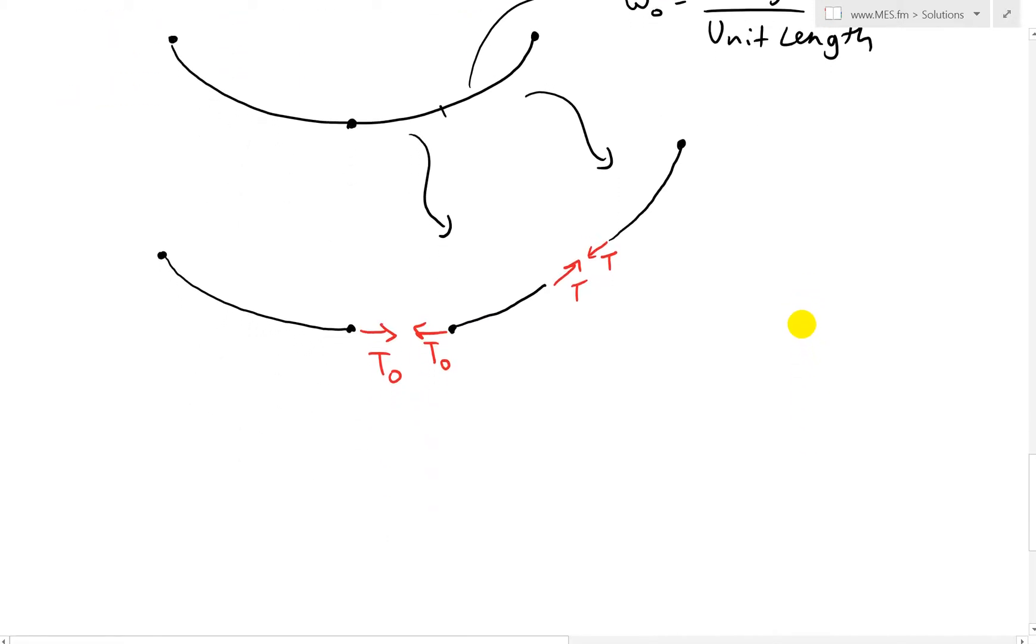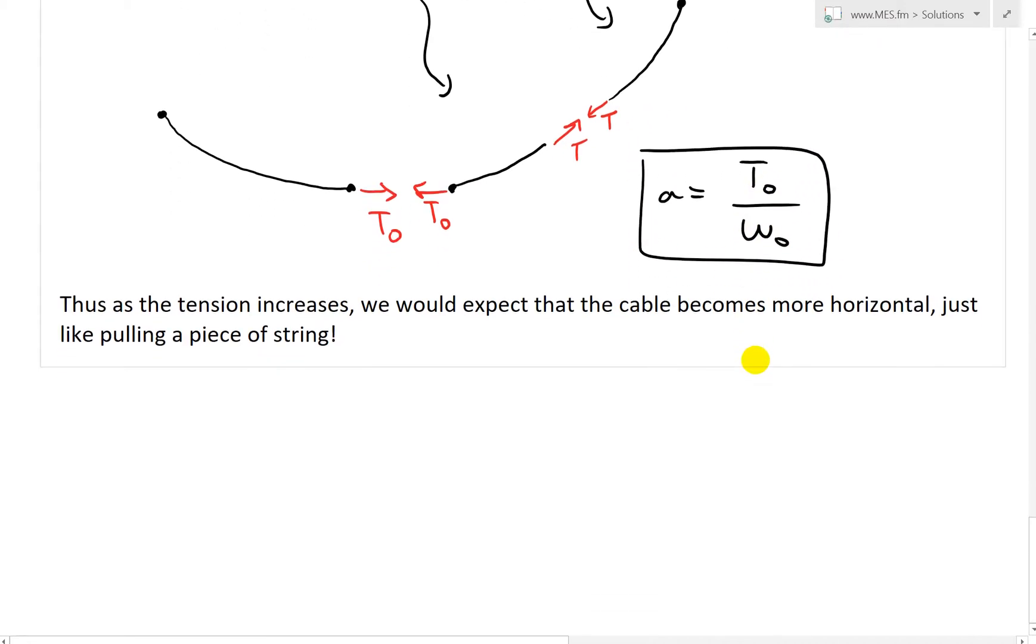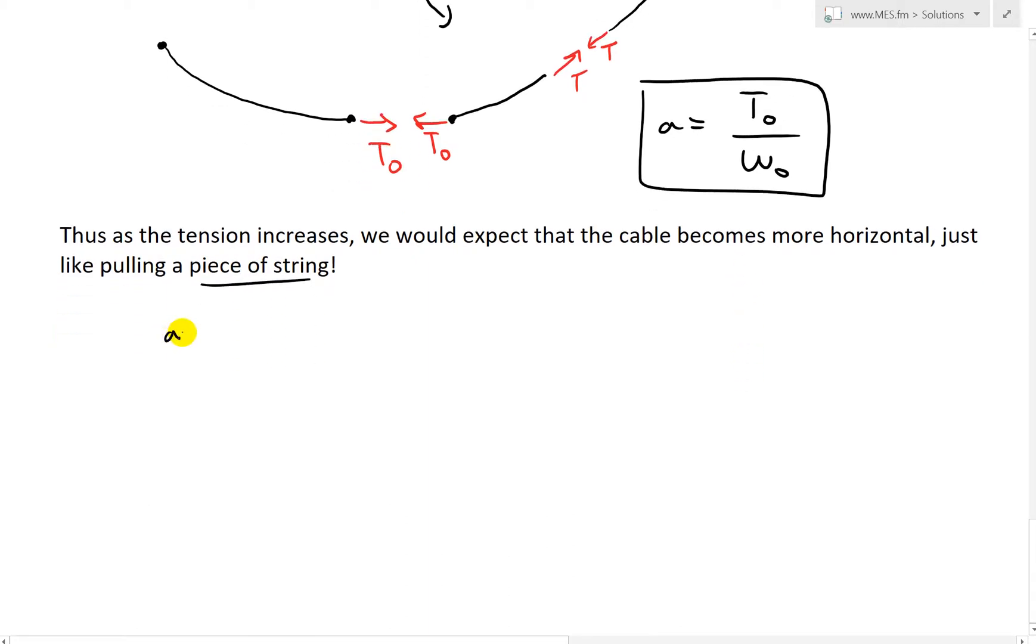Yeah, so thus we have the ratio A equals T0 over that linear density over there. Yeah, so thus as the tension increases, we would expect the cable becomes more horizontal, just like pulling a piece of string. So as T0 increases, what we also have is A increases. And then we have a flattened curve.